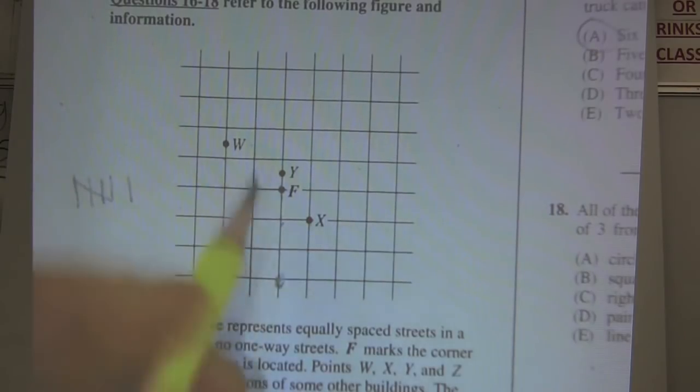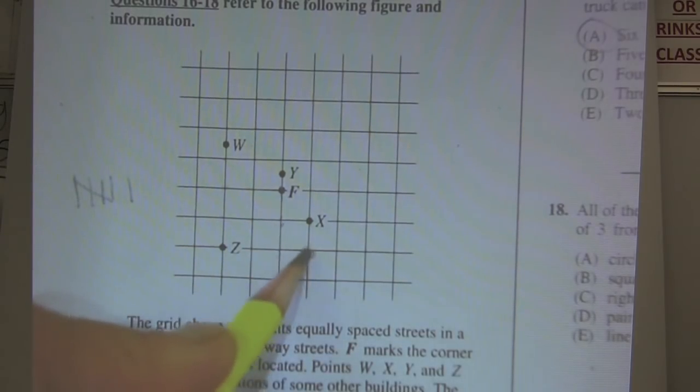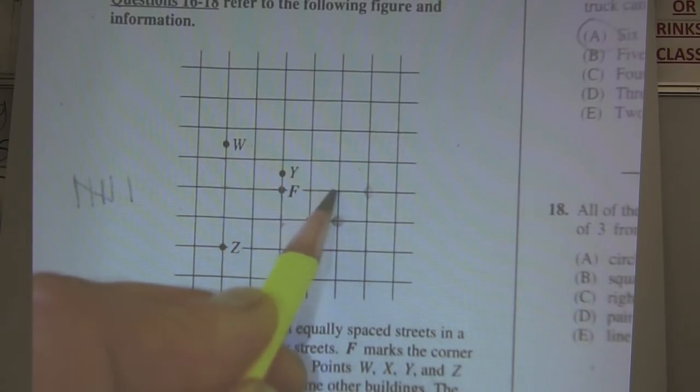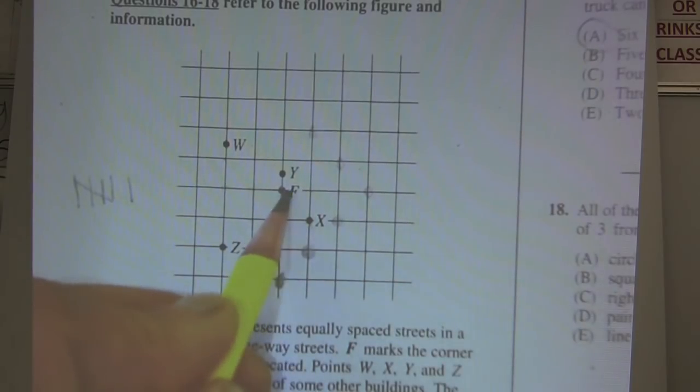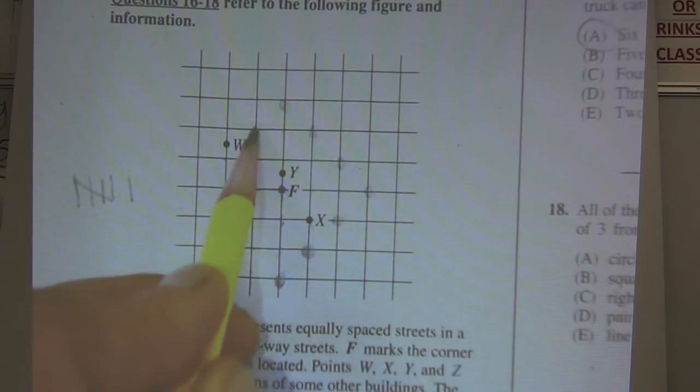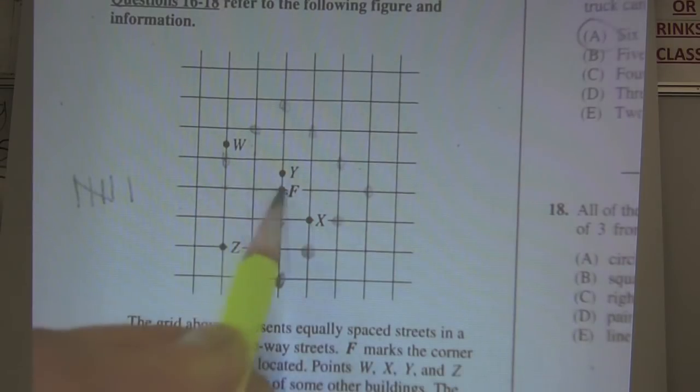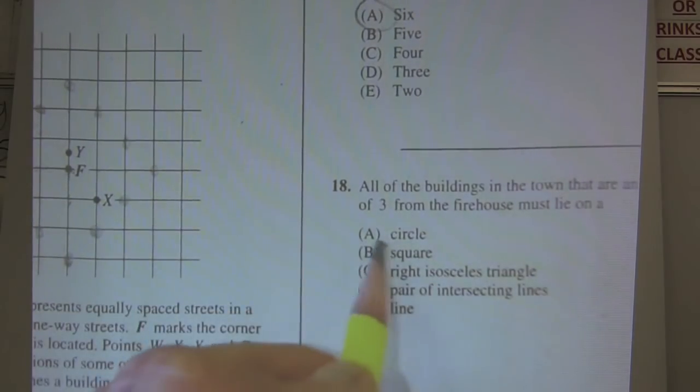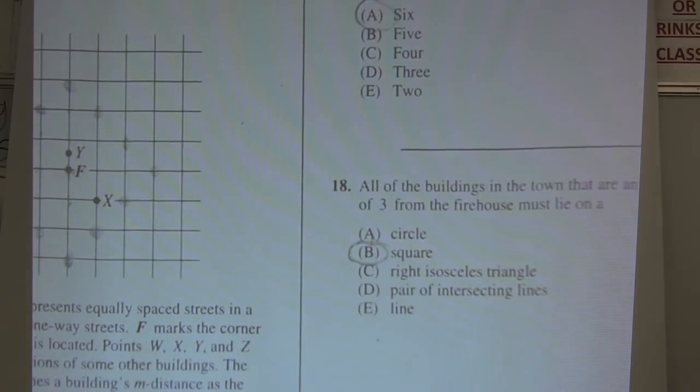1, 2, 3, there's another. 1, 2, 3, there's a figure. 1, 2, 3. 1, 2, 3. 1, 2, 3. It looks like it's going to be a square. So 18 ends up being a square.